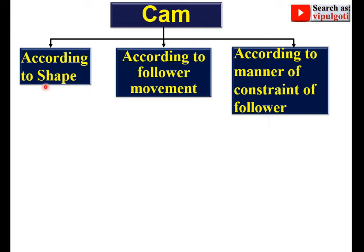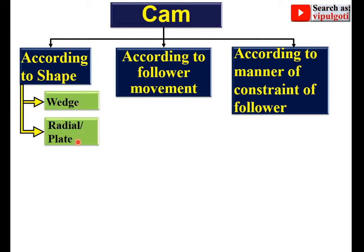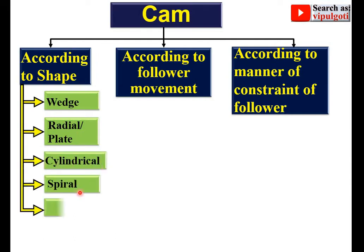First, according to shape, the cam is classified as: wedge cam, then radial or plate cam, then cylindrical cam, then spiral cam, and then spherical cam.